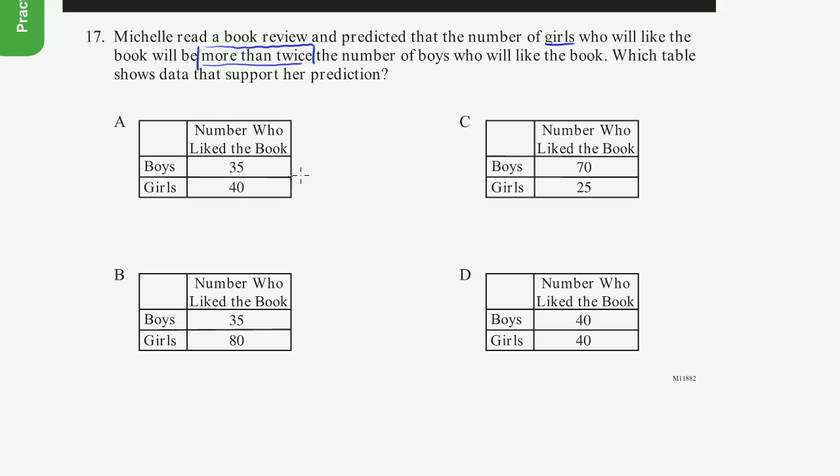So essentially we just need to find one of the tables where the number of girls who like the book, that's just this column right here, the number who like the book, should be more than twice the number of boys.